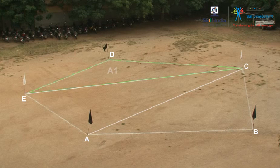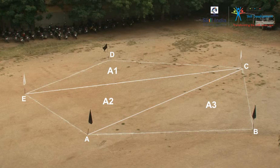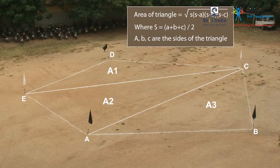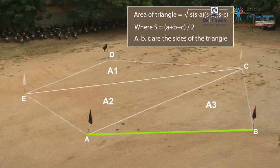Now, calculate the area of each triangle using this formula. S for triangle ABC is equal to the sum of the lengths of each side of ABC divided by 2. That is, S is equal to AB plus BC plus AC divided by 2, which means S is equal to 14 plus 12 plus 21 by 2, which is equal to 23.5.